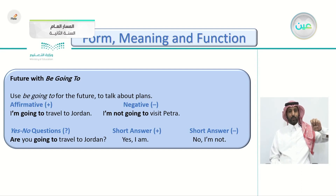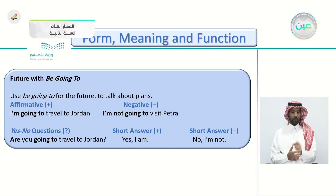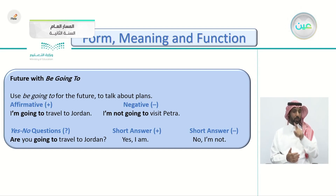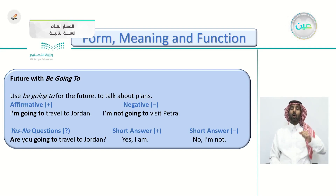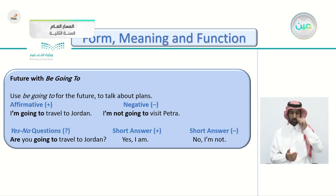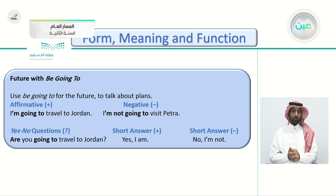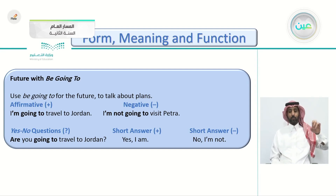You can also use it in a yes/no question. As always, you begin with the auxiliary verb: 'Are you going to travel to Jordan?' You begin with the verb to be 'are,' then the subject 'you,' then 'going to travel to Jordan.' Short answers: affirmative — 'Yes, I am'; negative — 'No, I'm not.'